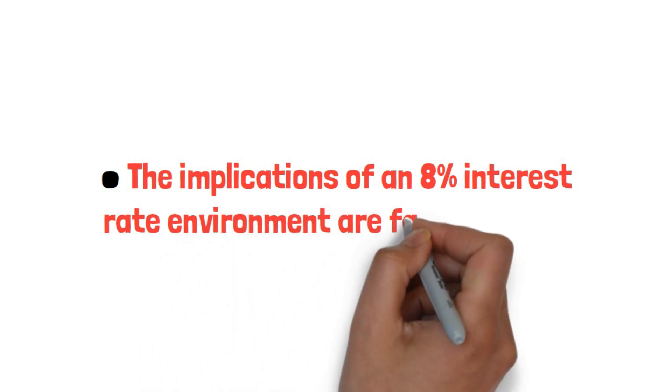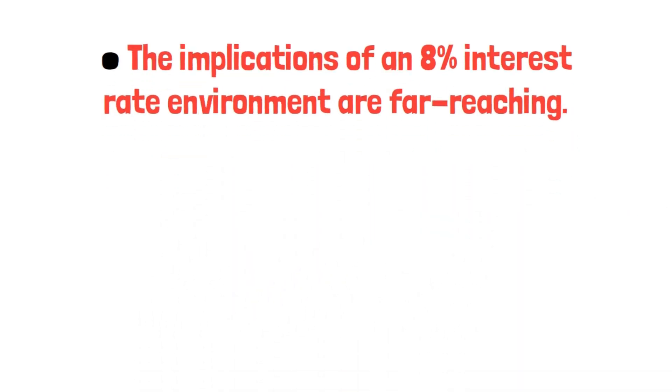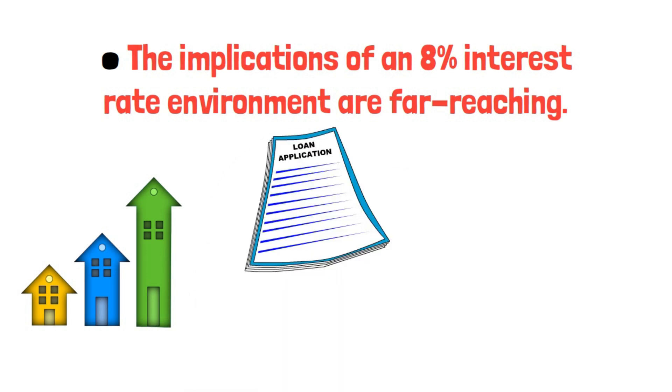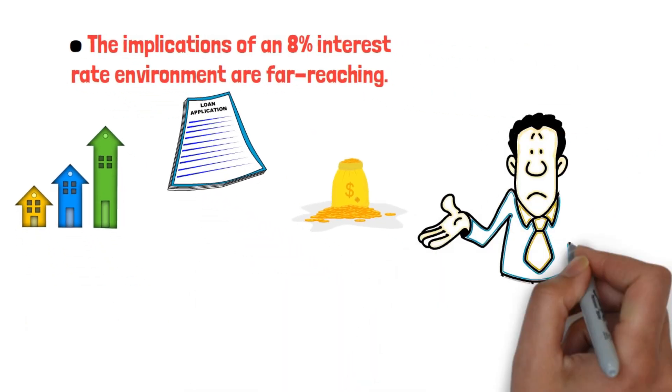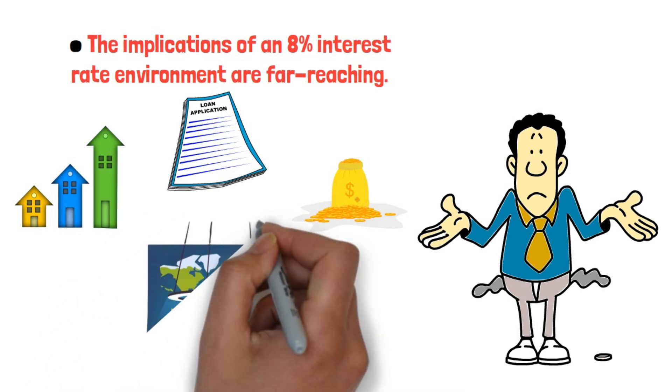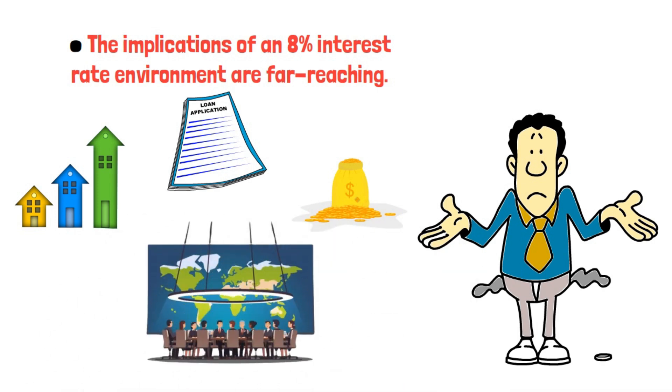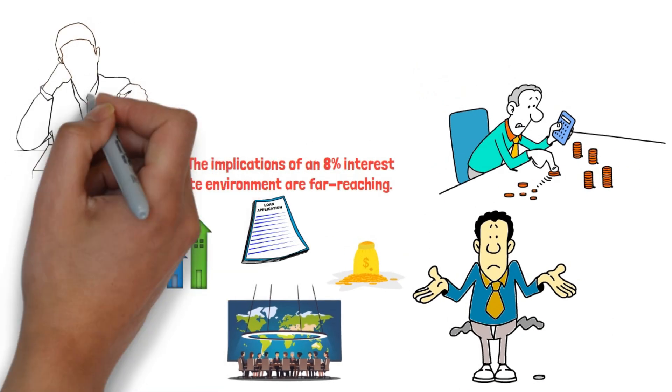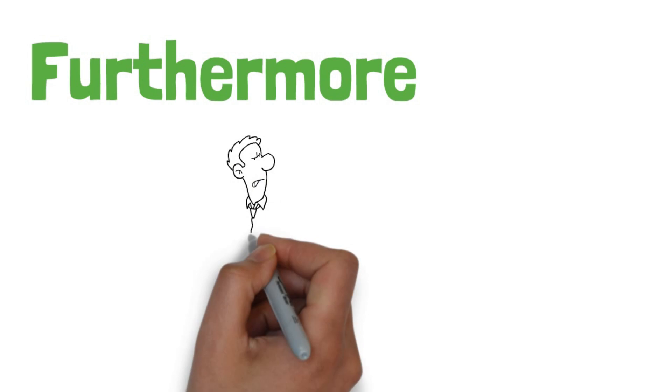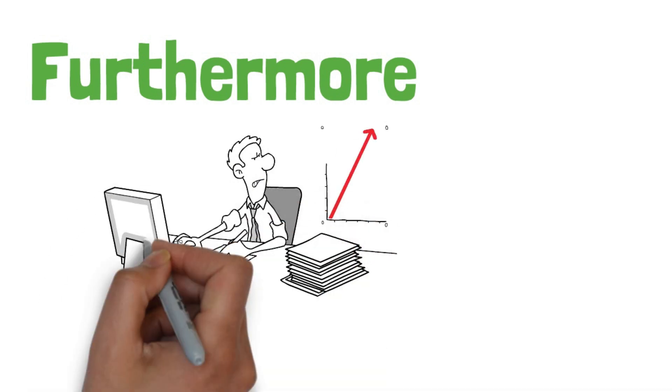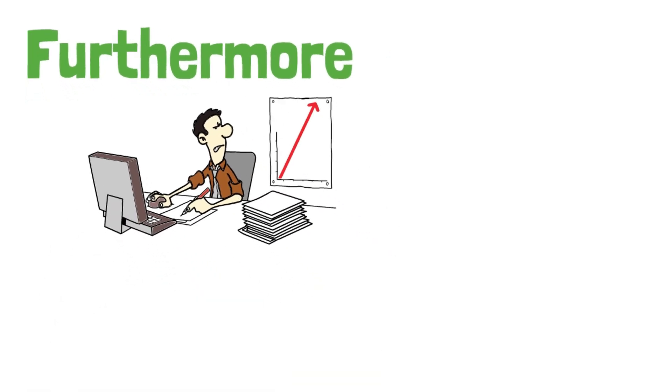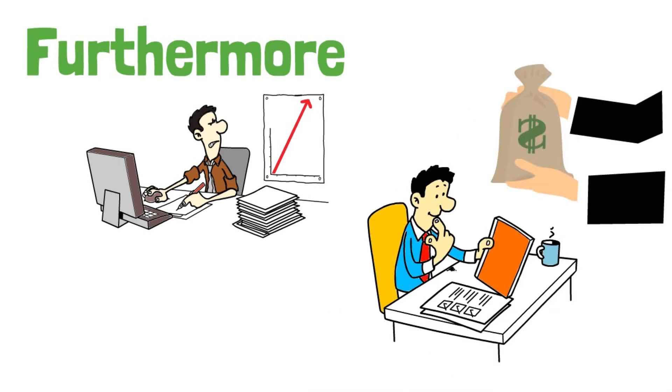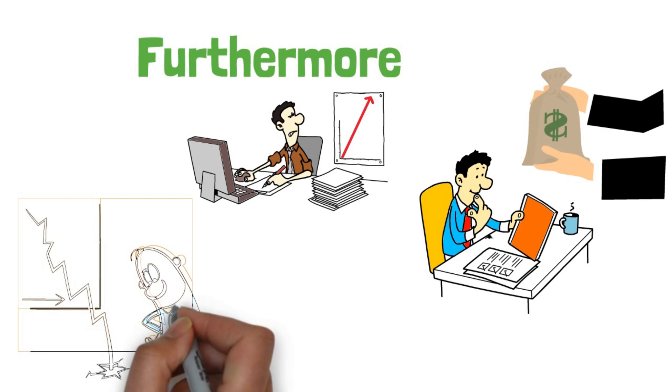The implications of an eight percent interest rate environment are far-reaching. Higher borrowing costs mean that consumers will find mortgages, auto loans, and credit card debt more expensive. This can lead to a reduction in consumer spending, particularly on discretionary items such as retail, travel, and leisure. When consumers cut back on spending, businesses in these sectors can suffer. Furthermore, elevated interest rates can discourage businesses from investing in expansion or new projects.